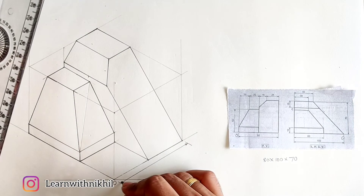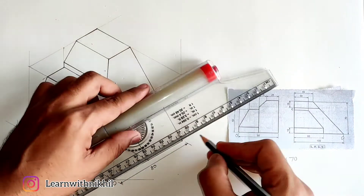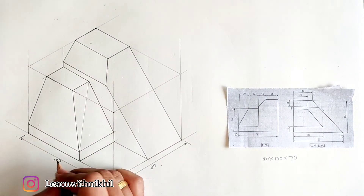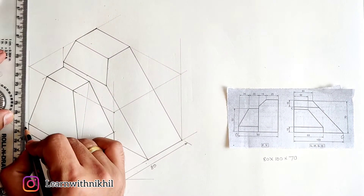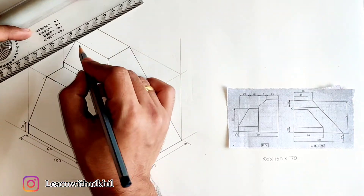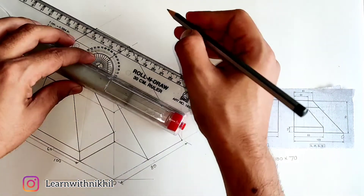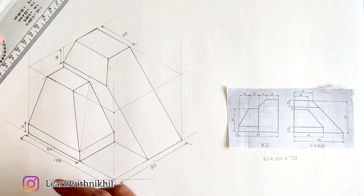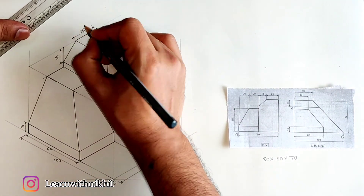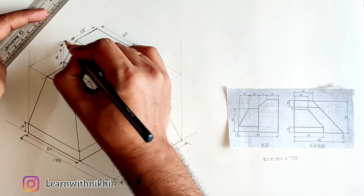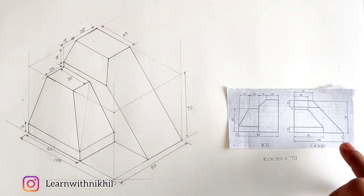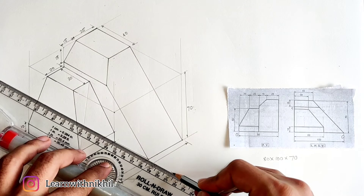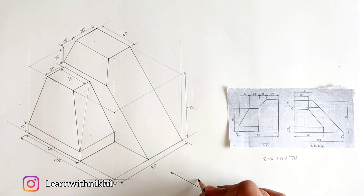Now after drawing this figure, we can just mark the dimensions — whatever dimensions are given, we will mark them on this figure. At the end, see whether the front view and the side view are proper with the three dimensional figure. Just look at the three dimensional figure and then recheck the front view and the left hand side view. Mark all the dimensions properly at the end. Don't forget to mark the front view with the direction of arrow X. And with this, we are totally done with the figure.